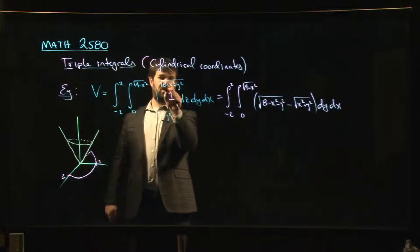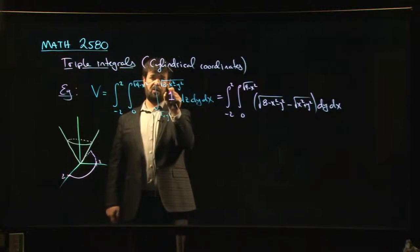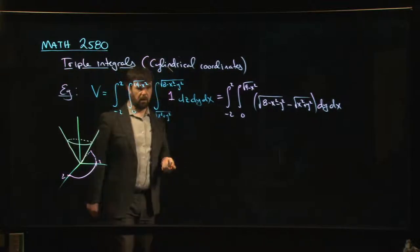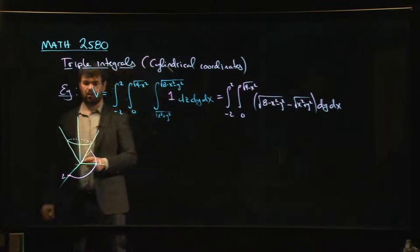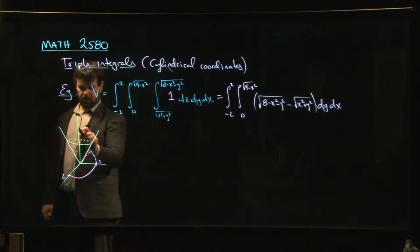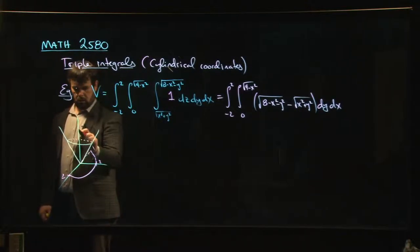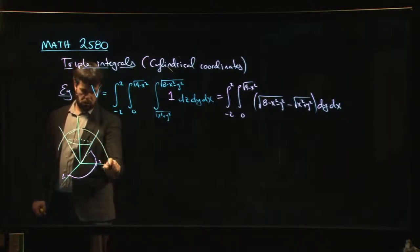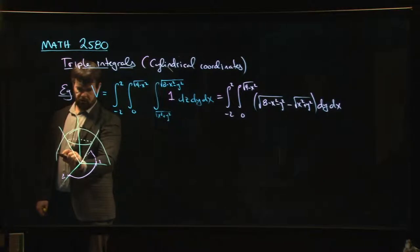And z equals, this is the top half of a sphere of radius, well to root 2. So it's a sphere that looks something like this. So there's our sphere and we can see that the sphere and the cone, they actually intersect along a circle.